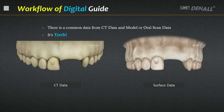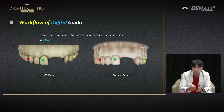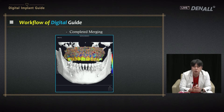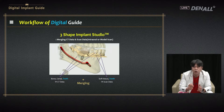On the actual software, CT data on the left and surface data are marked at the same point — for example, on the canine — and they can be merged. Surface data and CT data are merged to provide complete data including bone and gingiva. Once merged, a crown can be designed in advance. Based on that crown, implant size, depth, and position can be determined.